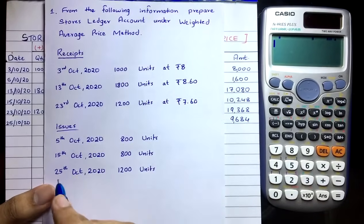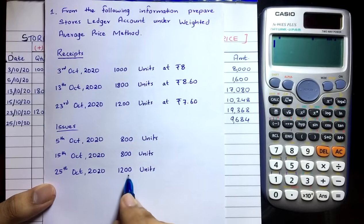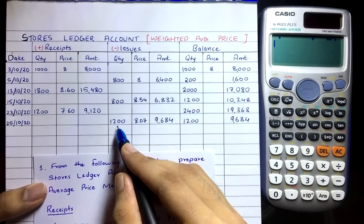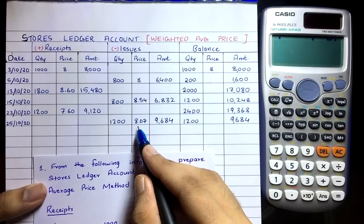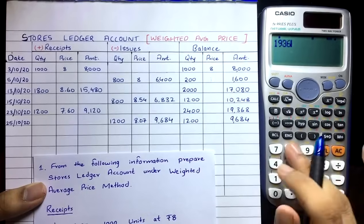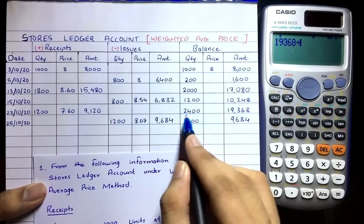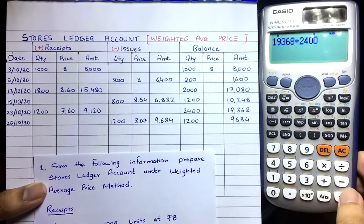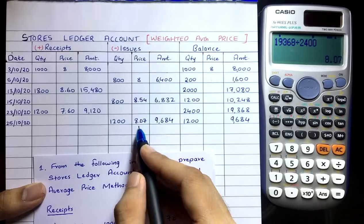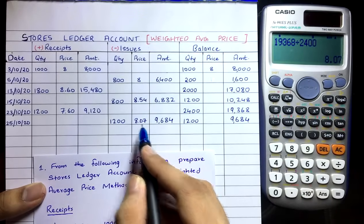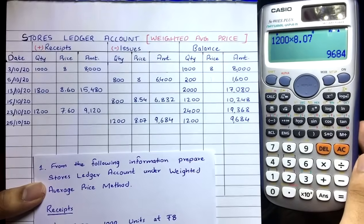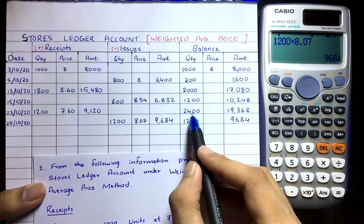On 25th October, we issue 1,200 units. Weighted average price: ₹19,368 ÷ 2,400 = ₹8.07. Cost of issue: 1,200 × 8.07 = ₹9,684.